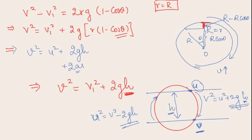To summarize vertical circular motion: the highest point requires minimum velocity √(rg), the lowest point has minimum velocity √(5rg), and the two side points at angles π/2 and 3π/2 have velocity √(3rg). In the next lecture we will solve problems based on vertical circular motion and define the radius of curvature. We will also study circular motion for extended objects like rods or spheres.